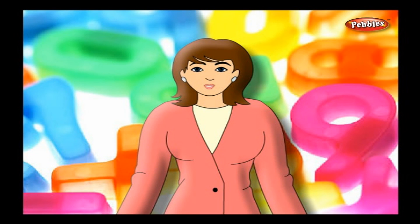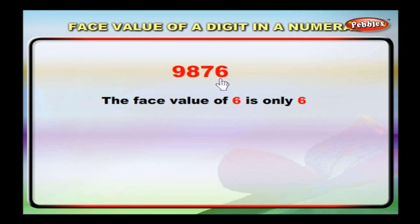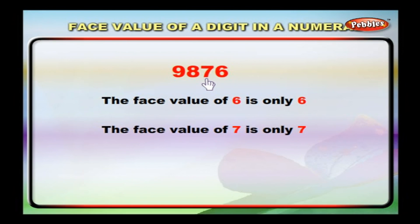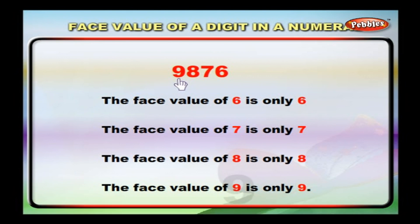The face value of a digit in a numeral will remain the same at whatever place it stands — there will be no change in the value. Thus, in the numeral 9876, the face value of six is six, the face value of seven is seven, the face value of eight is eight, and the face value of nine is nine.